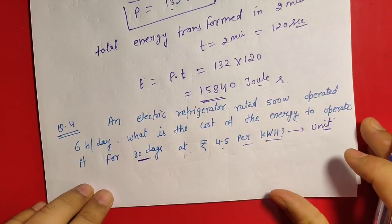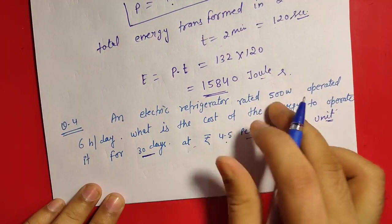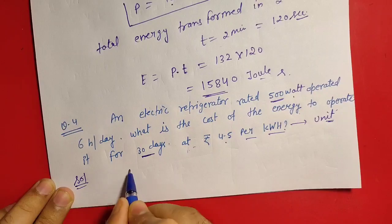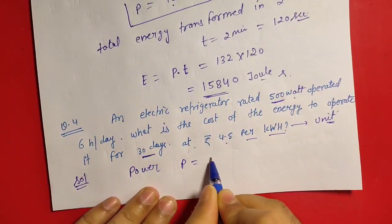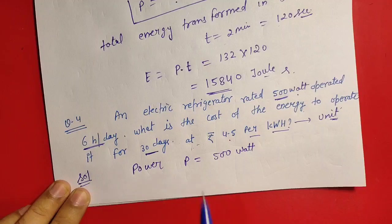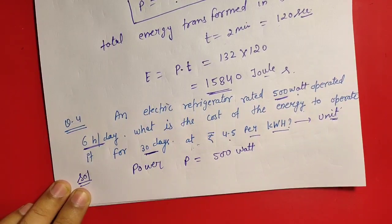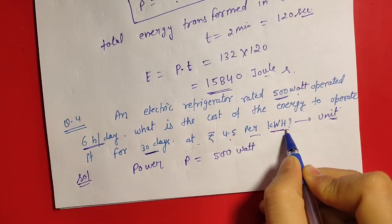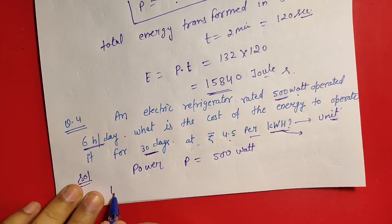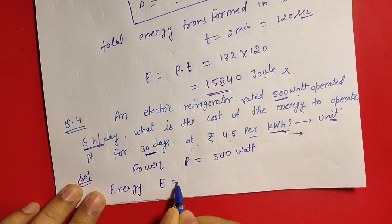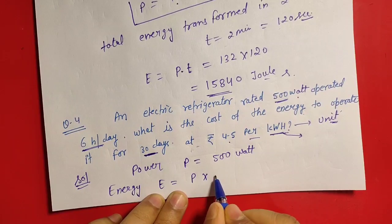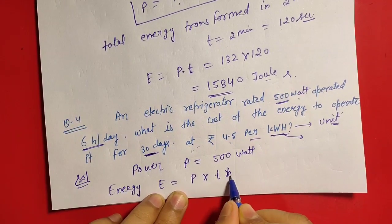Aur 4.5 rupees ke rate se vo 30 days mein kitna pay karega, vo find out karna hai. Electric power kyunki watt de rakha hai, to watt means it is a unit of power. To power of refrigerator, power of refrigerator P is equal to given 500 watt. Kitne hours use hota hai? 6 hours use hota hai. Total energy consumed in given 30 days.